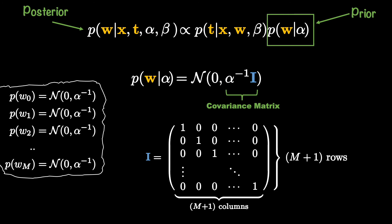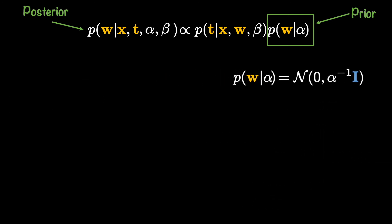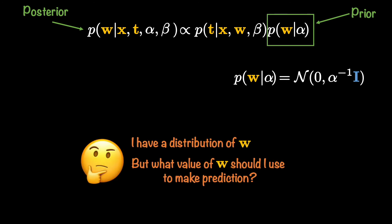Similarly, the posterior notation can be extended to include both alpha and beta parameters. Now that we have a distribution of weights that we obtain, or at least we have a formulation using the likelihood and the prior, the next question is what value of w should we use to make the prediction? You see, posterior is a distribution of w and you have to pick a value of w in order to make a prediction.